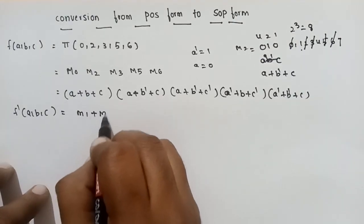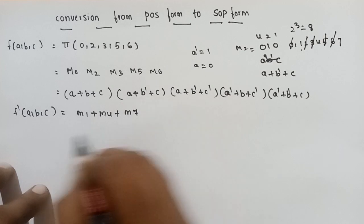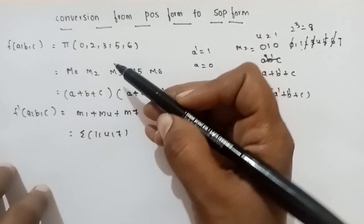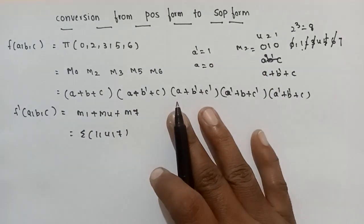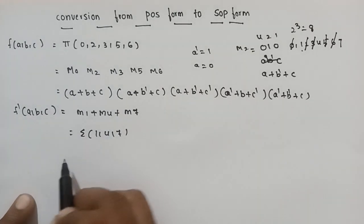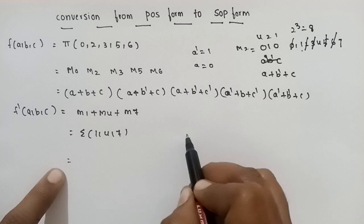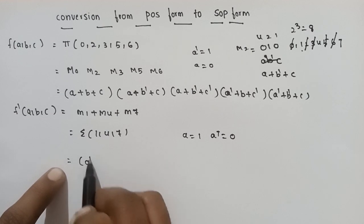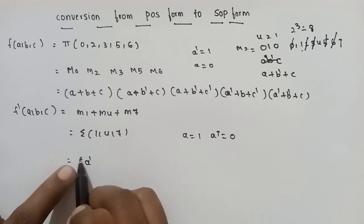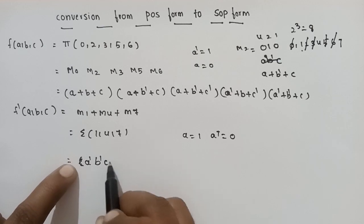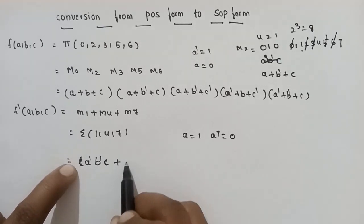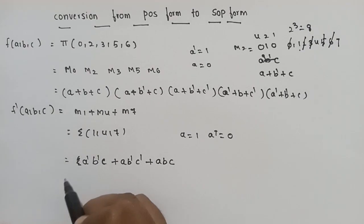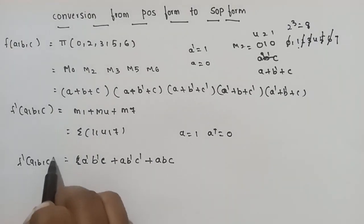The min terms are M1, M4, M7 — that means sigma of 1, 4, 7. The product of the max terms is the sum of the min terms. M1 is 0,0,1 — that is A, B, C. Plus M4 is 1,0,0 — that is A, B, C. M7 is 1,1,1 — that is A, B, C. So this forms the sum of products form.